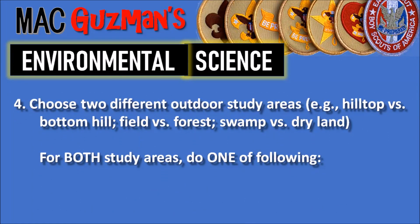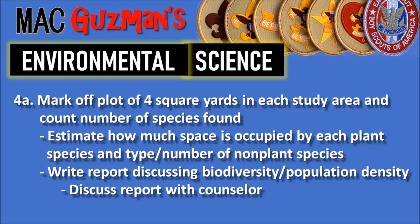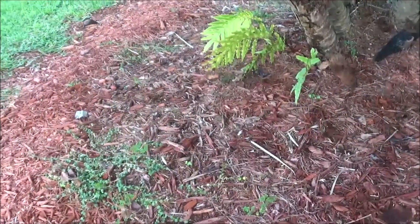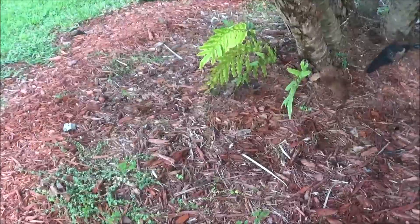For number 4, you choose two different outdoor study areas — like a hilltop versus the bottom of a hill, a field versus a forest, or a swamp versus dry land. For both areas, I chose option 4A: mark off a plot of four square yards in each study area, count the number of species found, estimate how much space is occupied by each plant species, and the type and number of non-plant species, then write a report discussing biodiversity and population density.